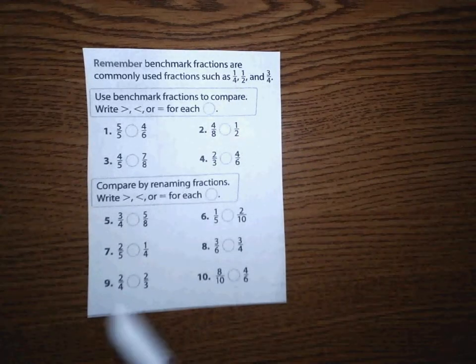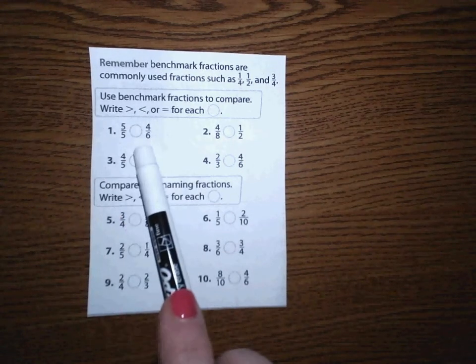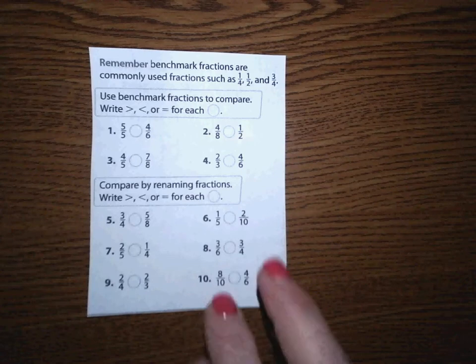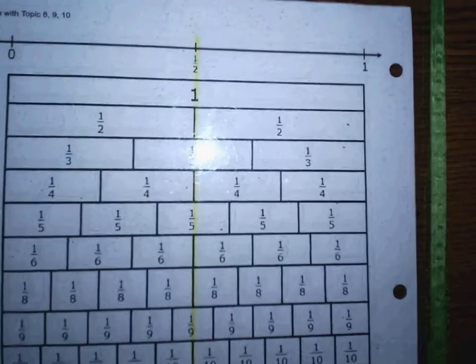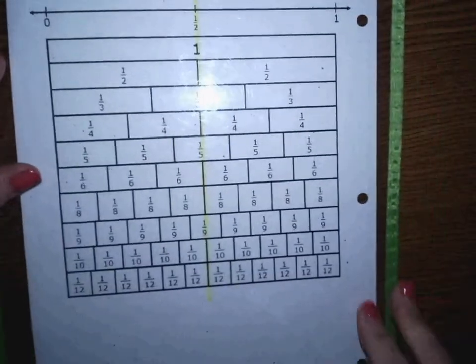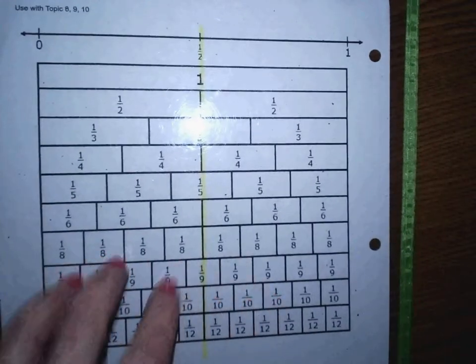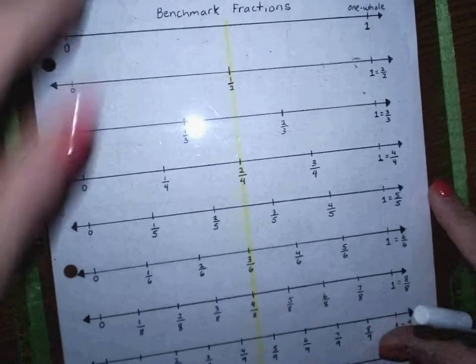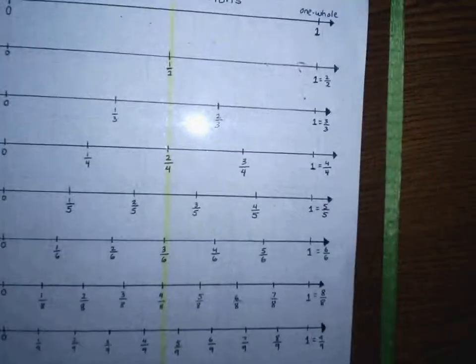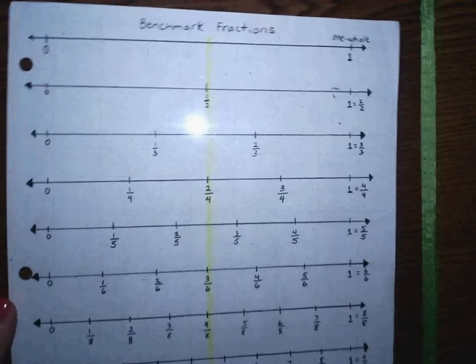So here we have five-fifths and four-sixths. One way that we were comparing fractions was we were using our benchmark fraction sheet inside of our communicators. This side has the fraction bars, and this side has the number lines, and really it's whatever the student feels more comfortable with. Either one will work just fine.